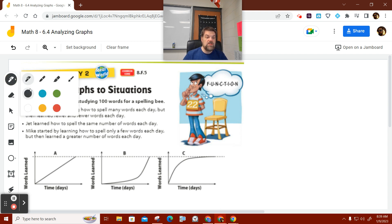Grace, I'm going to choose blue for Grace. So for Grace, she learned how to spell many words each day, but learned fewer and fewer as time went on. Which one is that? Is that A, B, or C? C. Yes. So this is Grace.